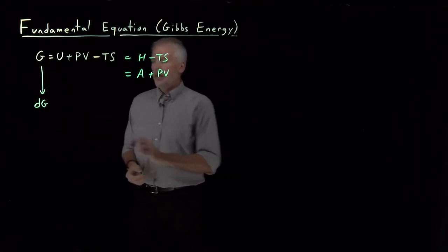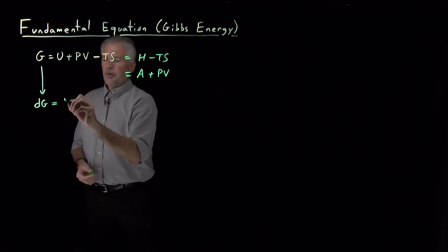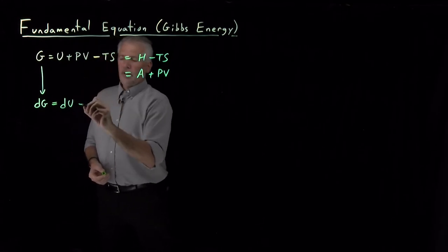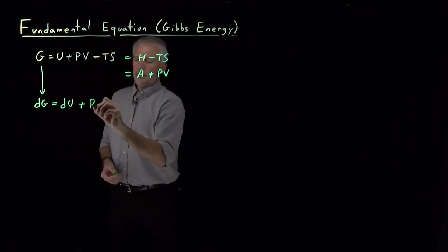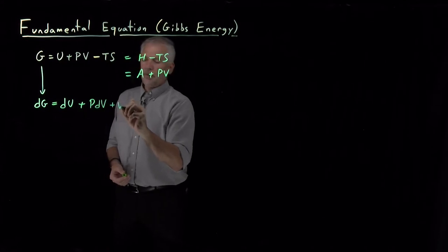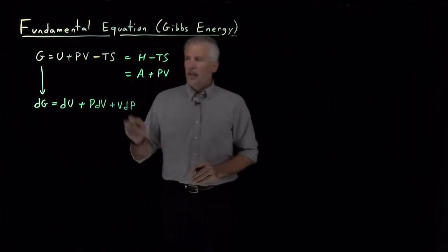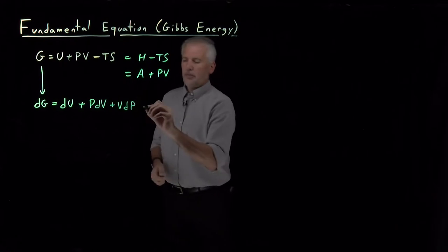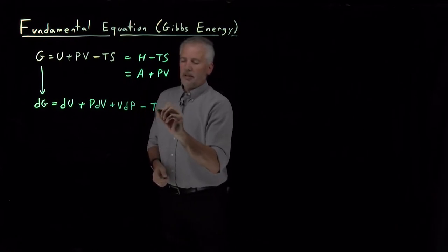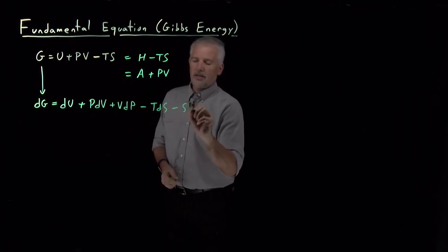So, the differential of G is DG. On the right side, the differential of U is DU. PV becomes PDV plus VDP if I take the differential of it. And this negative TS term becomes minus TDS and a minus SDT.